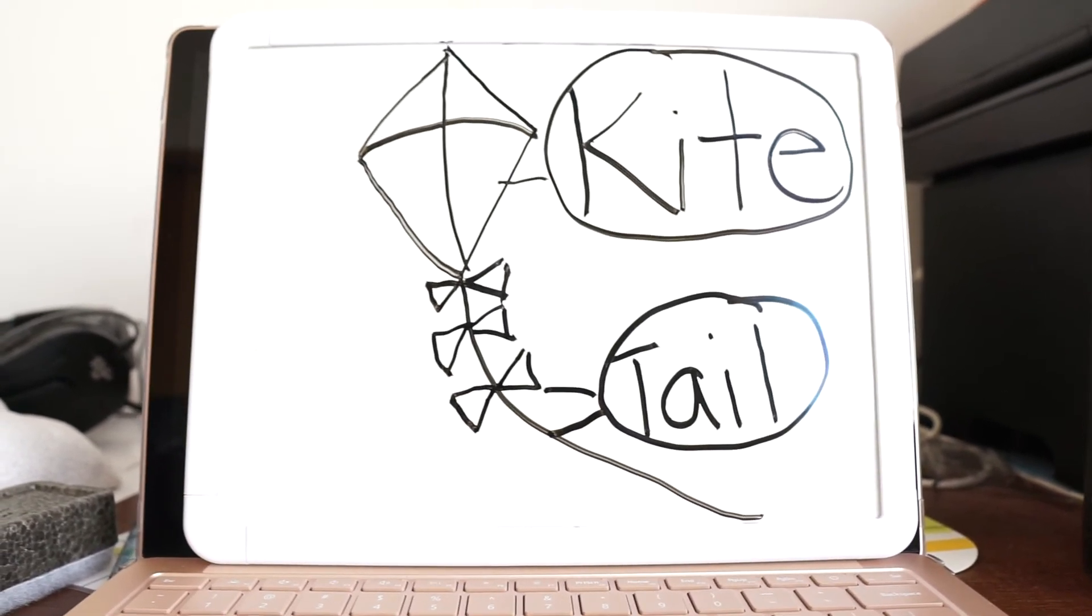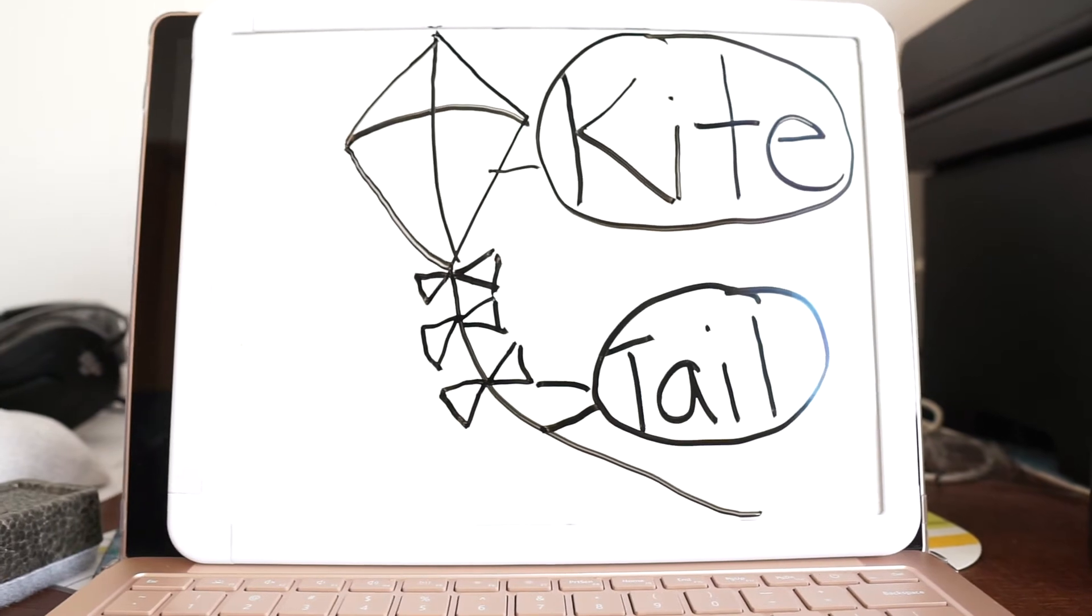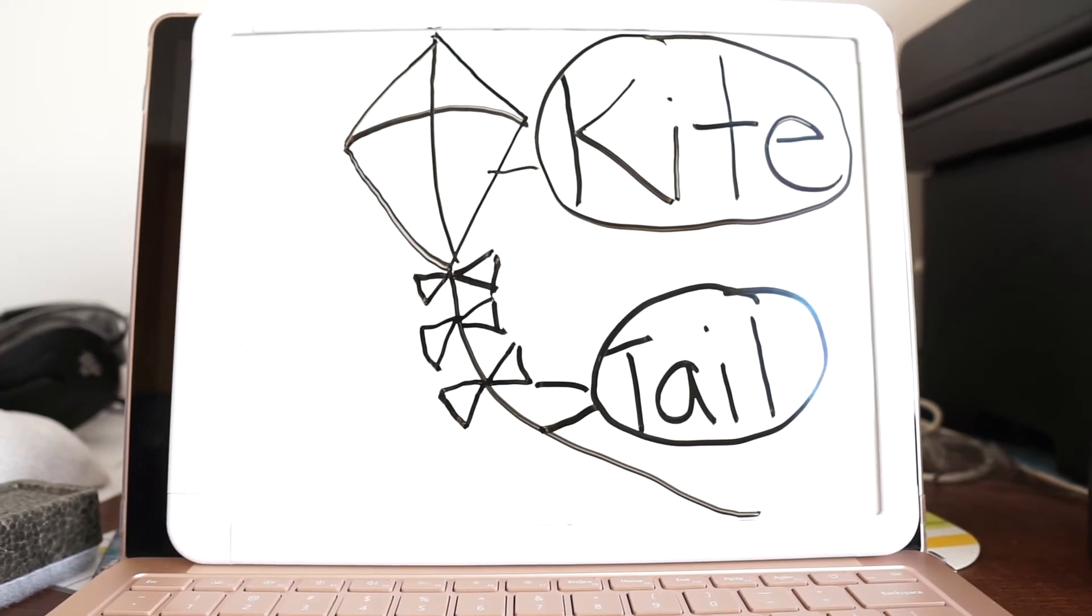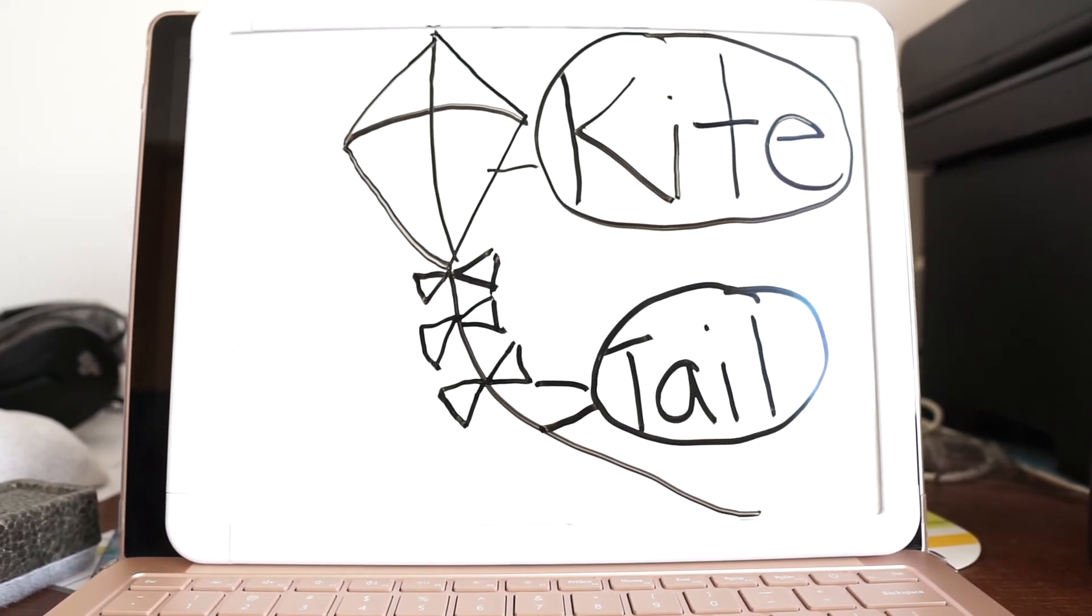Now we're going to do one more thing here, and that is we're going to pick a color for a kite. I think I'm going to color my kite red.